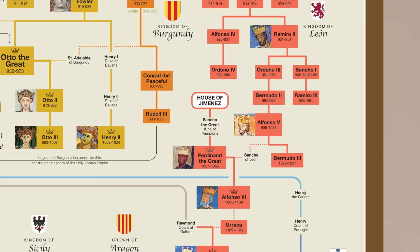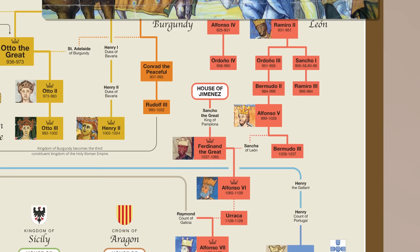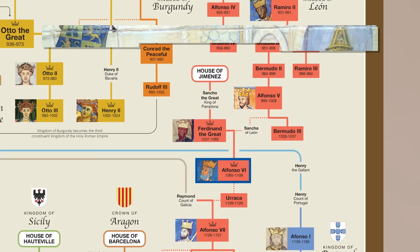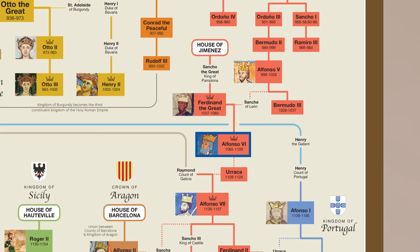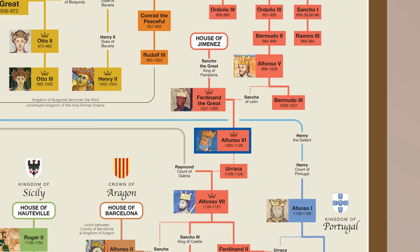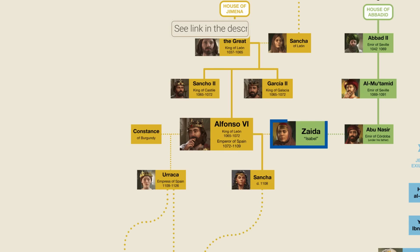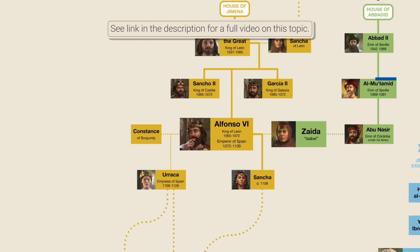One landmark victory came in 1085 when the city of Toledo was conquered by Alfonso VI, the son of Ferdinand and Sancha. The fall of Toledo was monumental because it gave the Christians a foothold on the Tagus River and opened the Muslim emirates to regular attacks. After this, the Muslim emirates appealed for help to the Almoravid dynasty in Morocco, who came to Spain and conquered most of the Muslim-held lands there.